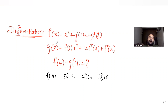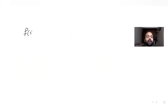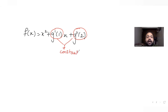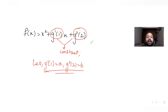To solve this, I note that f(x) = x² + g'(1)·x + g''(2). Since g'(1) is obtained by putting x=1 in g'(x), and g''(2) by putting x=2 in g''(x), both are constant terms. So I substitute g'(1) = a and g''(2) = b, giving f(x) = x² + ax + b.